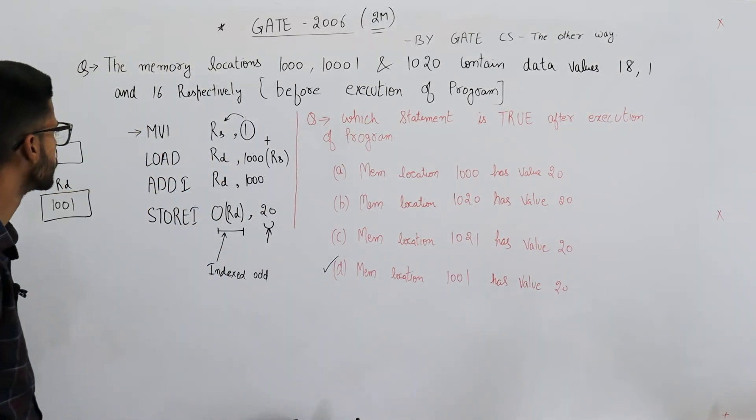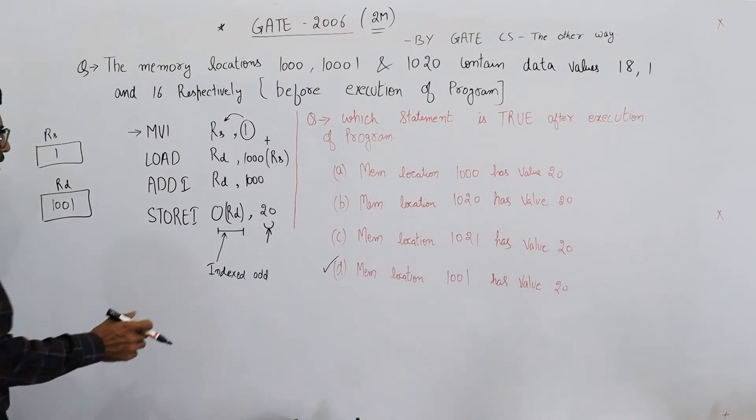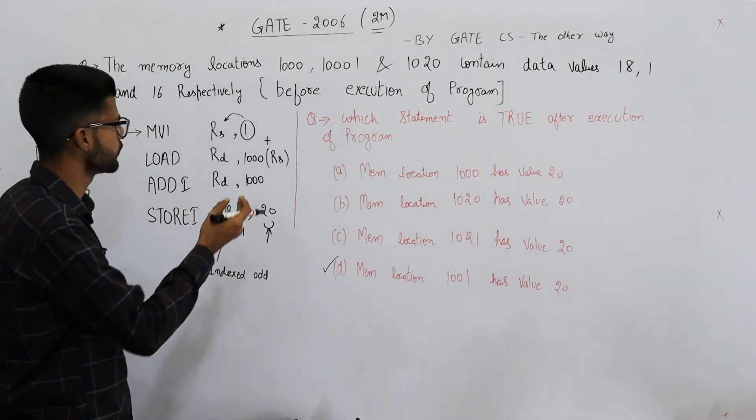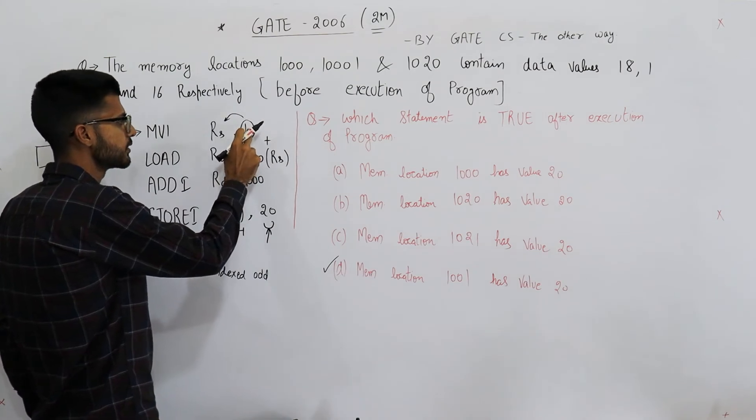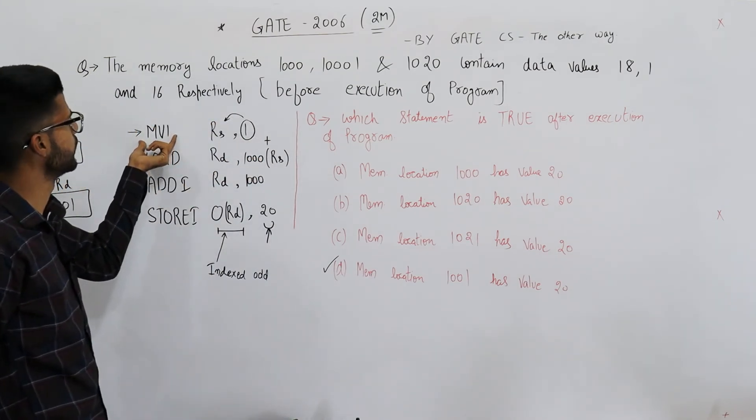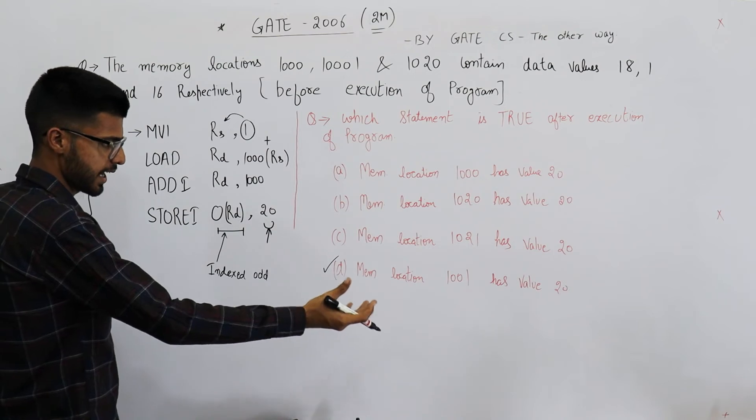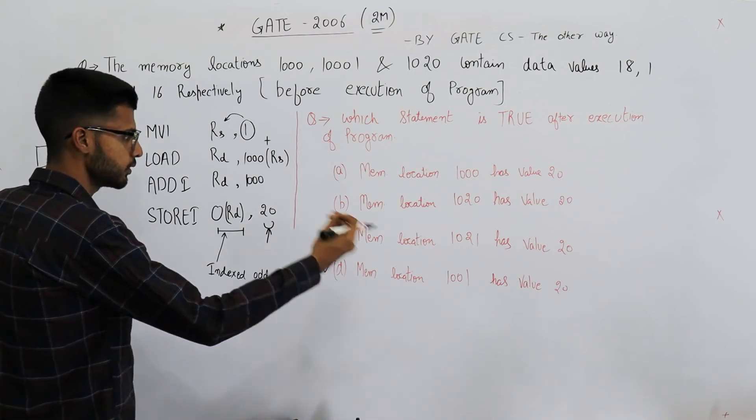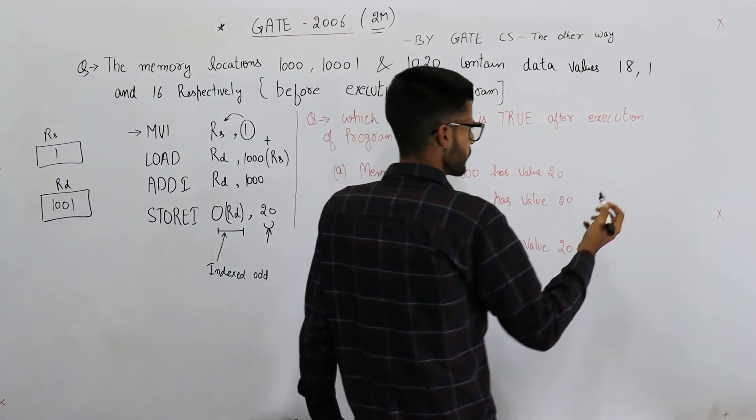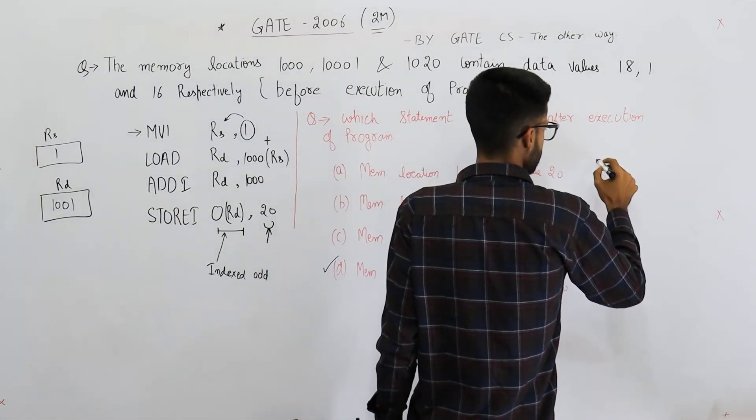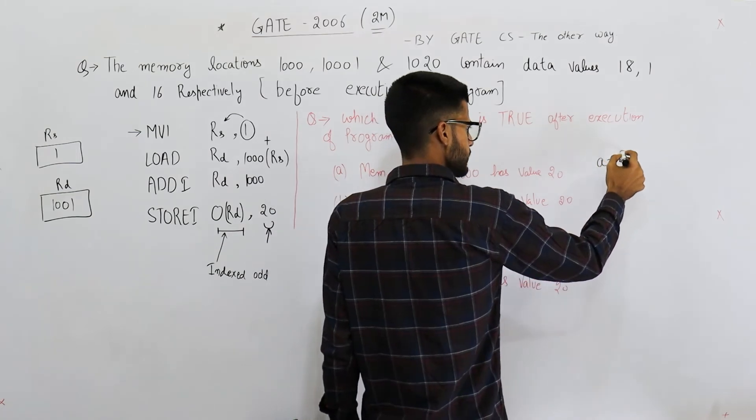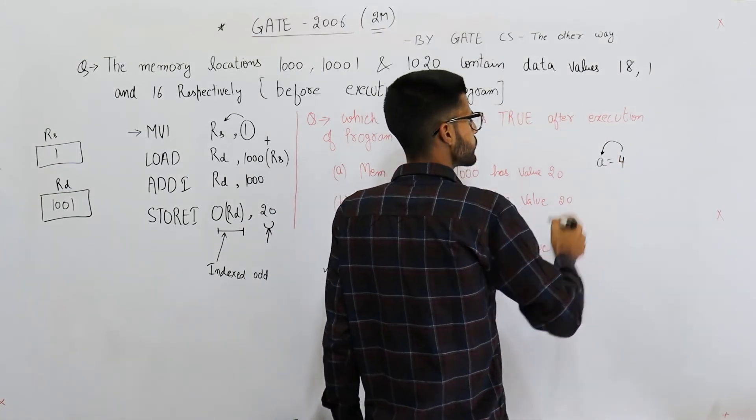First of all, the first operand is mostly the destination. So if you are saving some data, this is the source and this is the destination. That means move immediate is going to move data from the second operand to the first operand, so data travels like this. That's what happens in C language also - if you write a equals 4, that means this data travels this way, from rightmost to the leftmost.